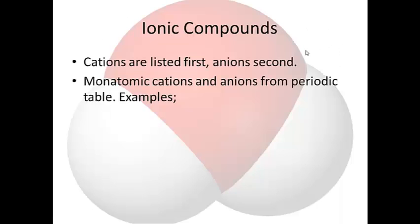In ionic compounds, the cation is always listed first whether you write the formula or the name. Cation is first and the anion is second.